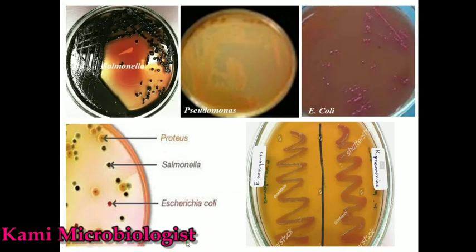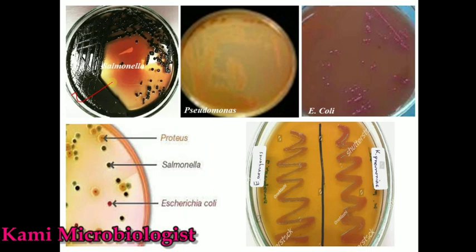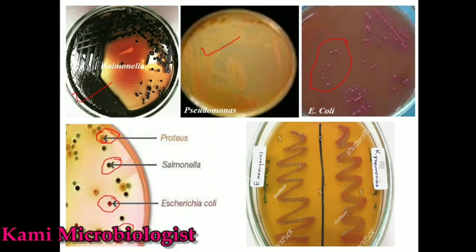Looking at the bacterial colonies: the first one represents Salmonella — blackish colonies indicating hydrogen sulfide production and non-lactose fermentation. Pseudomonas shows colorless colonies. Proteus shows irregular and colorless colonies. The blackish colony representing Salmonella shows H2S production. E. coli shows pink colonies, Shigella shows irregular colorless colonies. Klebsiella pneumoniae shows mucoid lactose-fermented colonies slightly larger than those of other organisms.